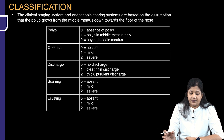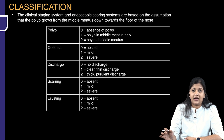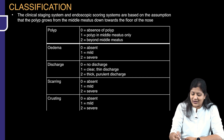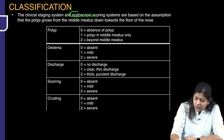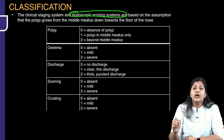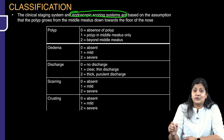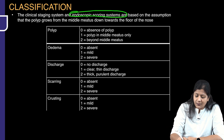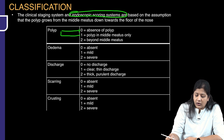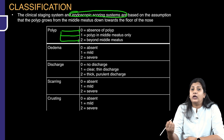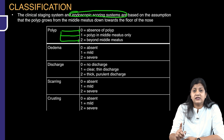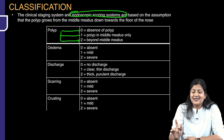We have a clinical staging system for polyps. This is an endoscopic scoring system, not an anterior rhinoscopic scoring system. For polyp grading: zero means there is no polyp at all; one means the polyp is localized only to the middle meatus; and two means it has gone beyond the middle meatus.